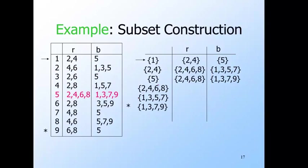Now we fill out the row for the DFA state {five}. That's fairly easy — just look at the row for five in the NFA table. On R you get {two, four, six, eight}, which we've seen already. On B you get {one, three, seven, nine}, which has not been created yet, so we create it. And notice that {one, three, seven, nine} is a final state of the DFA because it contains state nine, which is a final state of the NFA.